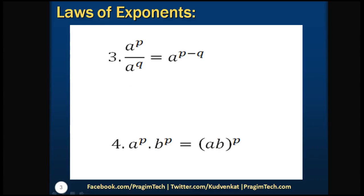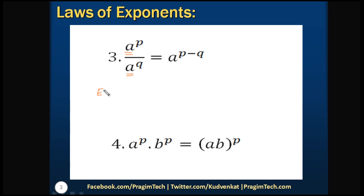The third law: a to the power of p divided by a to the power of q equals a to the power of p minus q. That means when the bases are equal and we have a fraction, we subtract the powers.